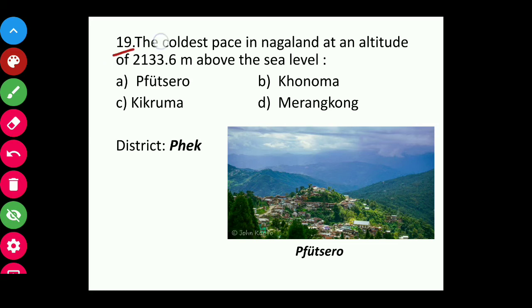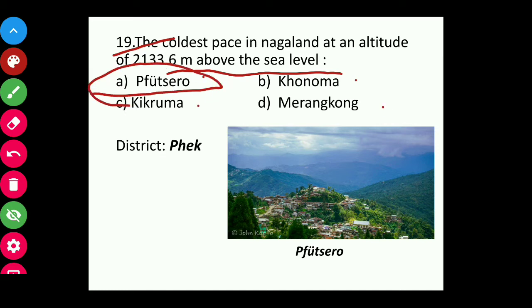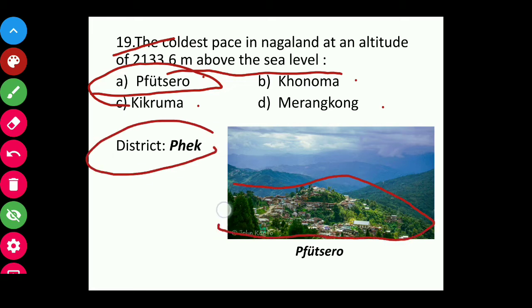Question nineteen: The coldest place in Nagaland, at an altitude of 2,133.6 meters above sea level — options are Phutserro, Khonoma, Dzukou, or Brankum. The answer is Phutserro. It is under Pek district. You can see from the picture it is very high, and it is the coldest place in Nagaland.